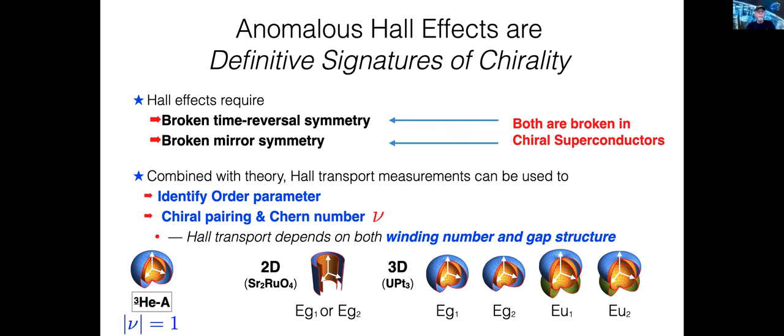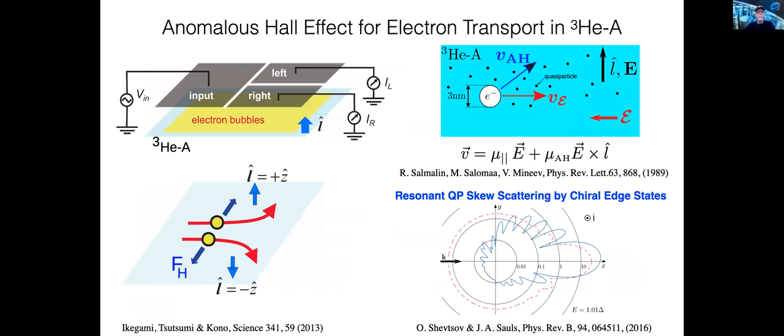Helium-3A is the only definitively identified chiral superfluid. It's chiral p-wave with nu equal one. That was established beautifully in the experiments done at RECAN, where they measured the anomalous Hall effect of electron bubbles.